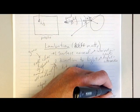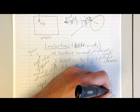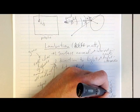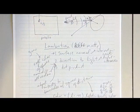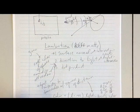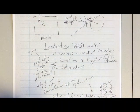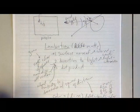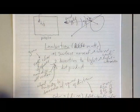So just to put that all together, the color at the intersection point is equal to the dot product of the vector which...